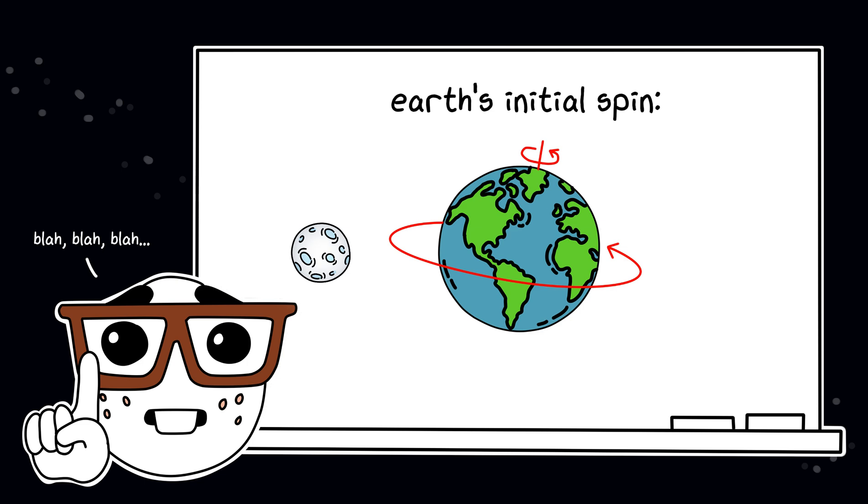The moon also slowed Earth's initial spin from a six-hour day to a 24-hour one. Slower rotation equals more stable conditions for life to evolve.